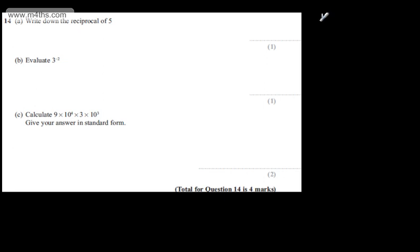All we're going to do is invert the fraction. So instead of 5 over 1, it becomes 1 over 5. For example, if I needed to find the reciprocal of 2 thirds, the reciprocal is 3 over 2.